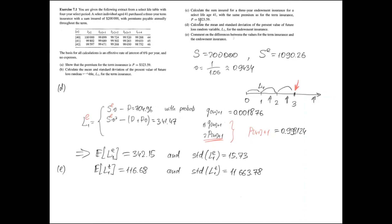The difference between the standard deviations is much more substantial. This is because the future cash flows for the term insurance are much more uncertain than those for the endowment insurance, as we can see from the formulas for the distribution of future loss random variable L1 for these two types of insurance. Under the endowment insurance the benefits will be paid out eventually anyway and the only uncertainty is the timing of those payments, while under the term insurance policy the benefits will not be paid out if the policyholder survives the term.